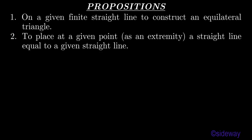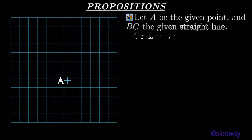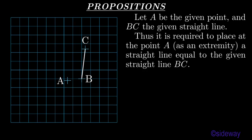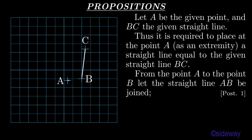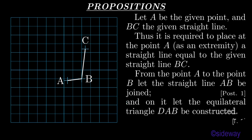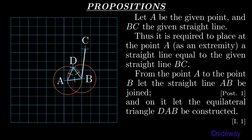Proposition 2: To place at a given point, as an extremity, a straight line equal to a given straight line. Let A be the given point and BC the given straight line. Thus it is required to place at the point A, as an extremity, a straight line equal to the given straight line BC. From the point A to the point B, let the straight line AB be joined, by Book 1 Postulate 1. And on it, let the equilateral triangle DAB be constructed, by Book 1 Proposition 1.